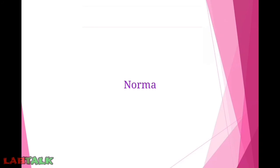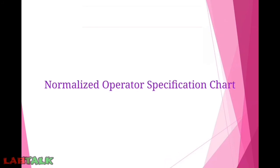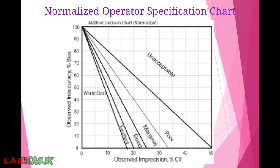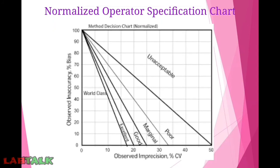The next topic is the normalized operator specification chart. The importance of this chart is that multiple parameters or multiple analytes can be plotted in a single operator specification chart. As in the regular OP spec chart, there are five lines corresponding to unacceptable, poor, marginal, good, excellent, and world class performance.